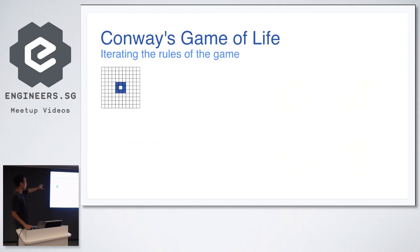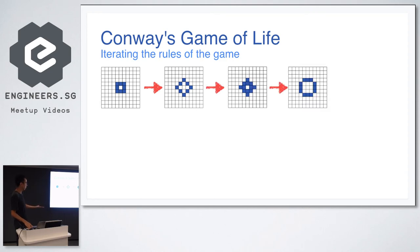If a dead cell, if an empty cell, a white cell, has exactly three living neighbors, it will become alive. And otherwise it will remain dead. So in the last example, because it only has one neighbor, it will remain dead. Pretty simple, right? Let's play this game. Initially I set a board like this. It's like a square. And then according to the rules, it becomes like this. Again, again, again.